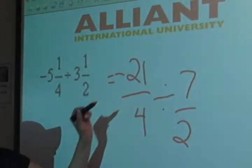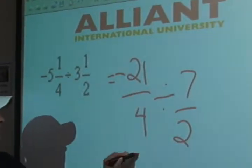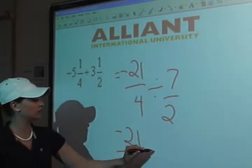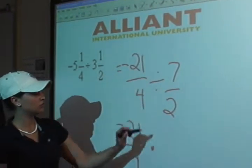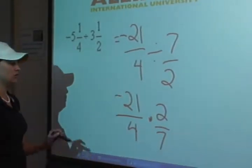I need to flip this so that we can multiply it. So it's going to be negative 21 over 4 times 2 over 7. We're just switching those two.